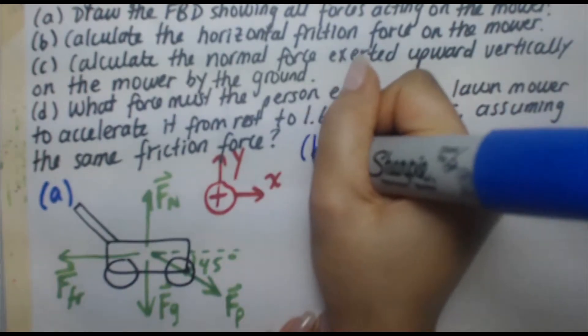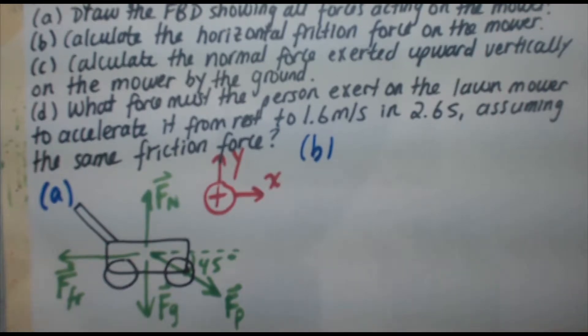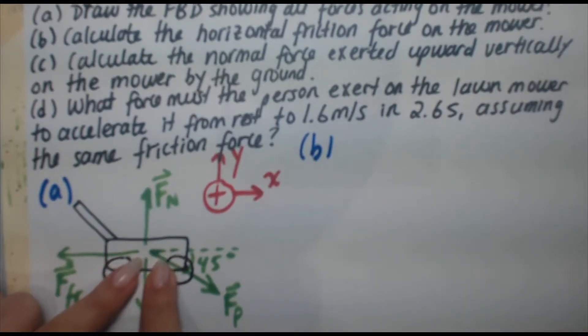So I'm going to let right be x, up be y. It's going to help with my labeling purposes and subscripts later. Okay, let's hop into part B. Calculate the horizontal friction force on the mower. So for part B, we're dealing with the horizontal direction.